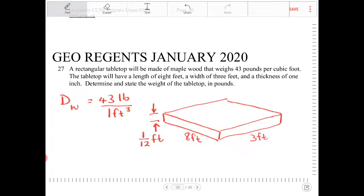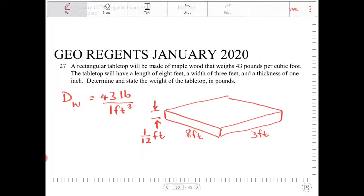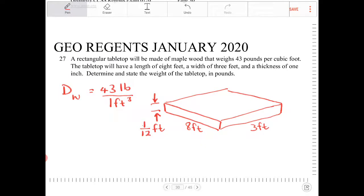And the tabletop has dimensions of 8 by 3. So this is going to be 8 and 3 feet. So units matter here greatly. And this is the one place that they're looking to throw you off. That 1 inch. So you've got to be careful.